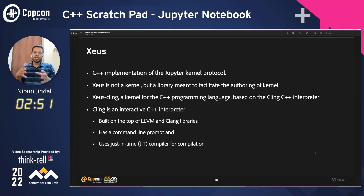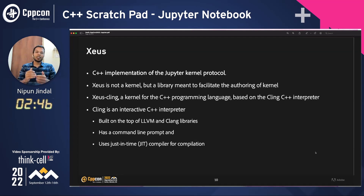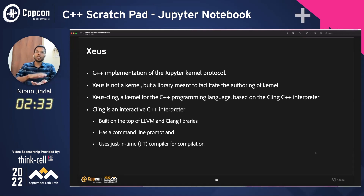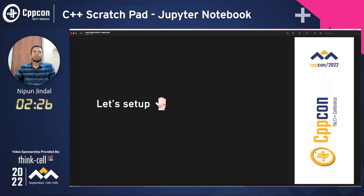Xeus and Xeus-Cling would actually enable us to write C++ code in Jupyter Notebook. Xeus is not the interpreter or the kernel, but it's the library to facilitate the authoring of kernels. Xeus-Cling is a kernel for the C++ programming language, which is built on the Cling C++ interpreter. The Cling C++ interpreter is built on LLVM, which JIT-compiles the C++ code and gives you basically a command-line prompt to work with.